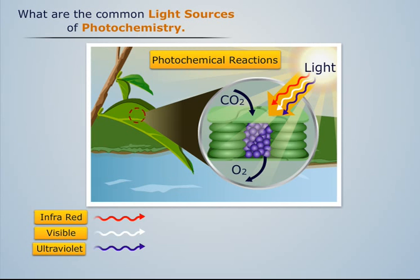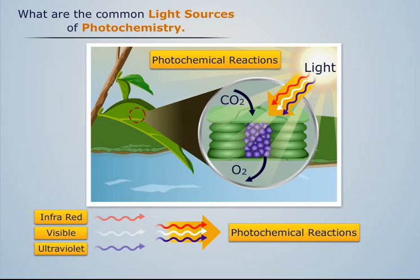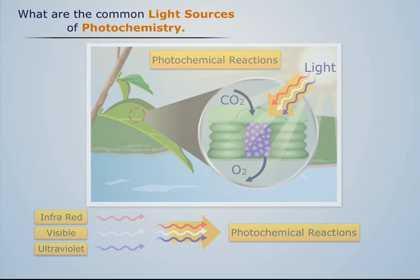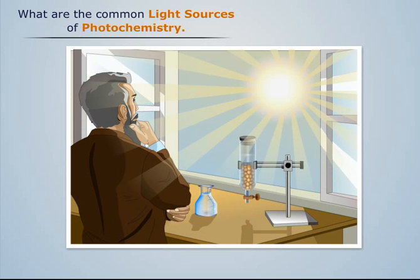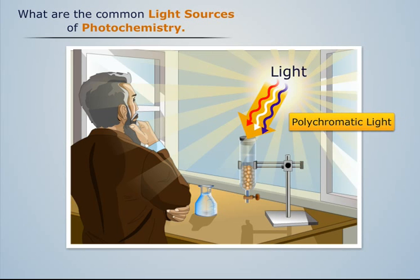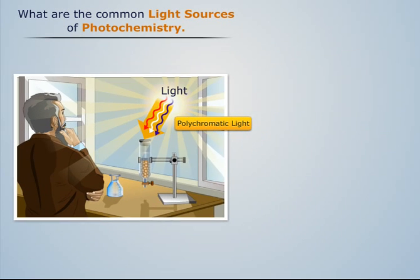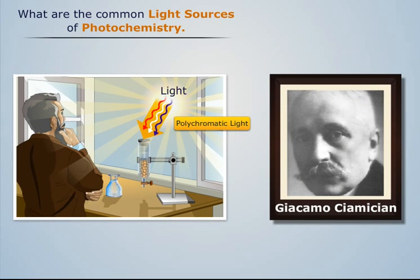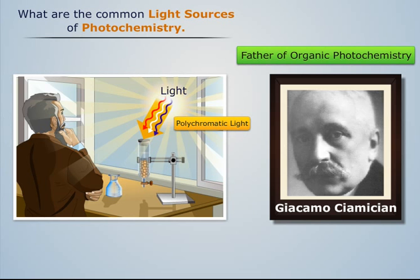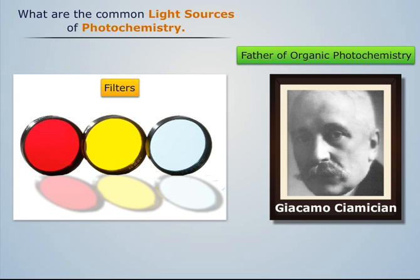In other words, a regular source of infrared, visible, or ultraviolet light is needed to initiate and carry out photochemical reactions. During the formative years of photochemistry, the Sun was the light source. Although sunlight is polychromatic, it was used by scientists like Giacomo Ciamician, who is considered the father of organic photochemistry, in his photochemical experiments. For selection of desired wavelengths, filters were used.